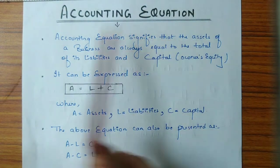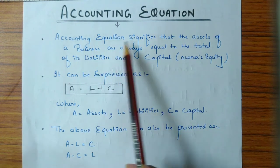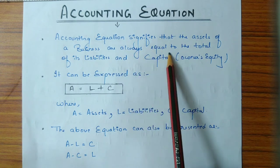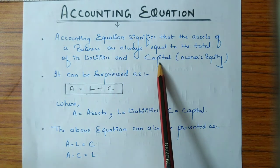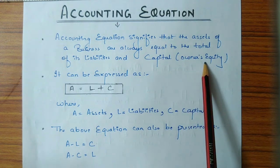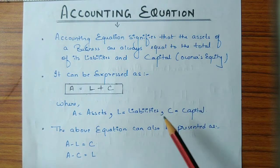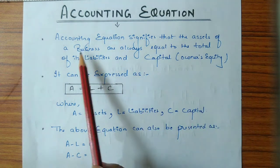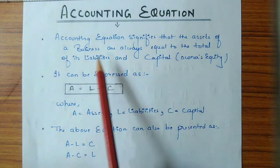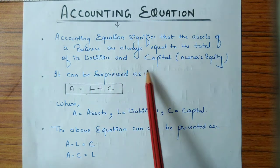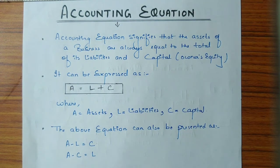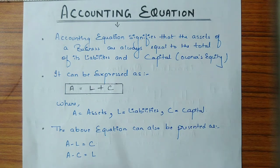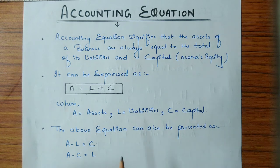Coming back to the topic: the accounting equation signifies that the assets of a business are always equal to the total of its liabilities and capital. Capital is also known as owner's equity. This is the same principle we already discussed for the balance sheet. The accounting equation is also based on the dual aspect concept, which means every transaction has two aspects — debit and credit — and after every transaction, assets should be equal to liabilities.